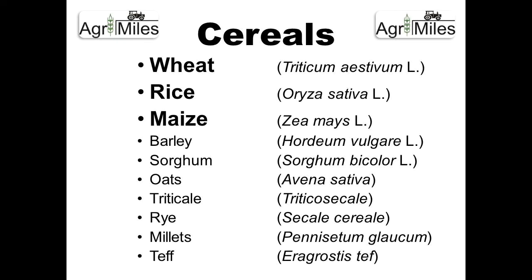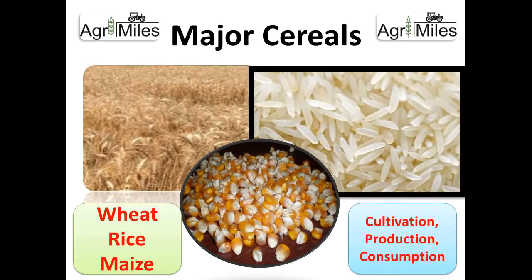How do we define major cereals versus minor cereals? There are basically three cereals known as major cereals: wheat, rice, and maize — based on their dominance in cultivation, production, and consumption across the world. There are no differences in their characteristic features; all other features are the same as other cereals. This classification or distinction is only based on their dominance in area, production, and consumption.